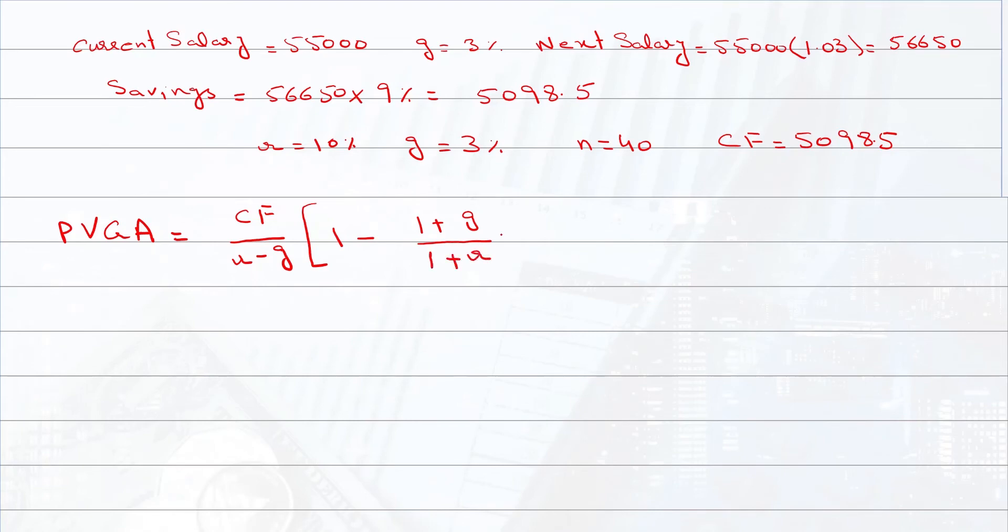So we have all the values. Cash flow is $5,098.5, r is 10% (0.1) minus 0.03, into 1 minus (1.03 divided by 1.01) raised to power 40. That is equal to $67,586. This is the present value of your savings.